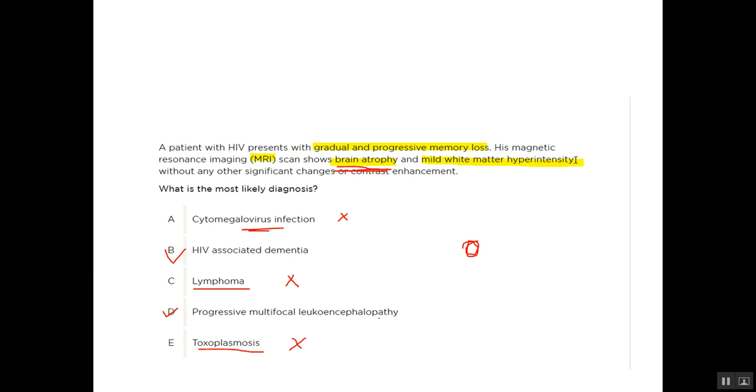It mostly affects the posterior region of the brain, and there are white signals in the MRI. Progressive multifocal leukoencephalopathy mostly causes cognitive impairment, but also has focal neurological symptoms.